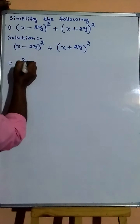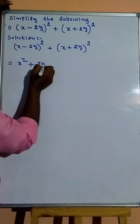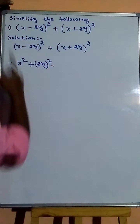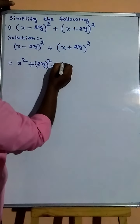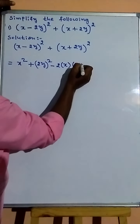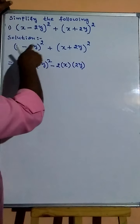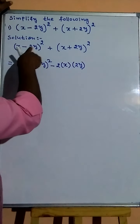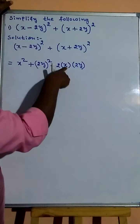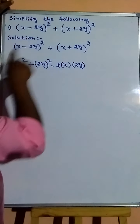Now, x squared minus 2 into x into 2y, then minus into minus gives plus, so 2y all square. This gives x squared minus 2 times x times 2y plus 2y all squared. So this is a² plus b² minus 2ab identity — that is the (a - b) whole square identity. Okay, 2x times 2y.